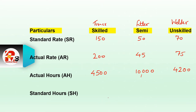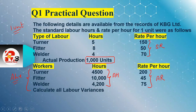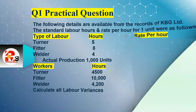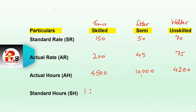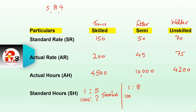Now we will find the standard hours. For 1 unit, Turner requires 5 hours and we are producing 1000 units, so standard hours = 5,000. Similarly, 1 unit requires 8 hours for Fitter, so 1000 units gives 8,000 hours. For Welder, 1 unit requires 4 hours, so 1000 units gives 4,000 hours.